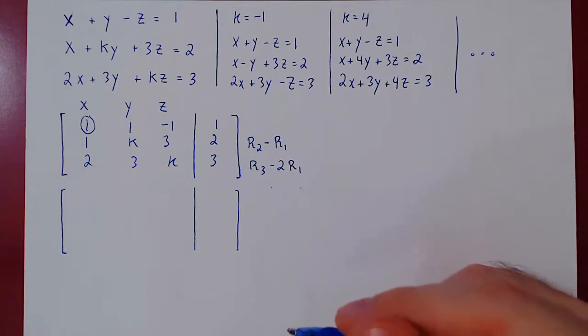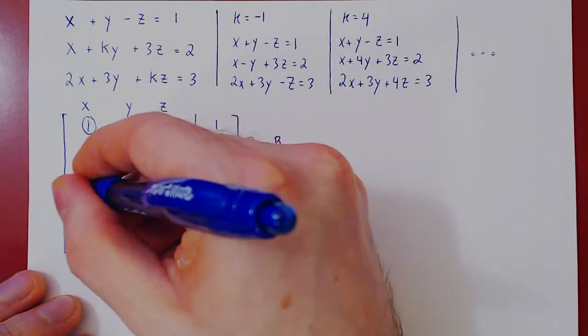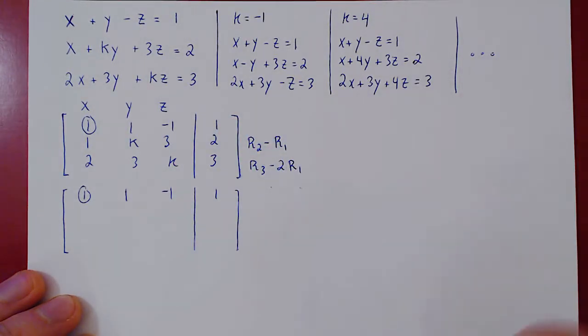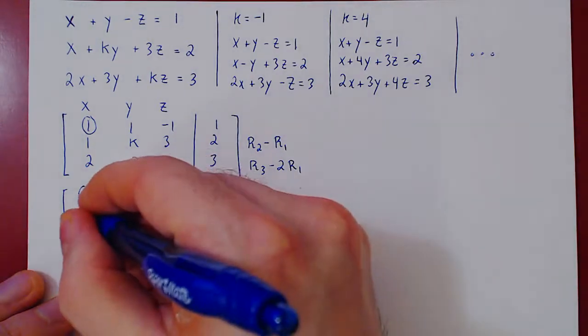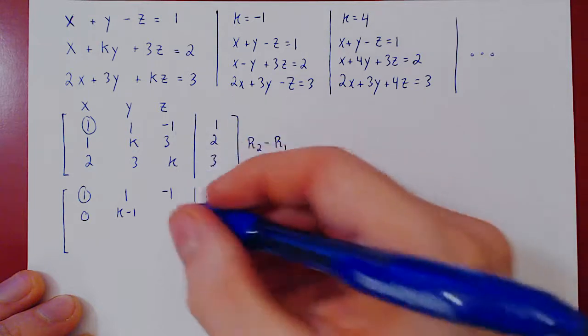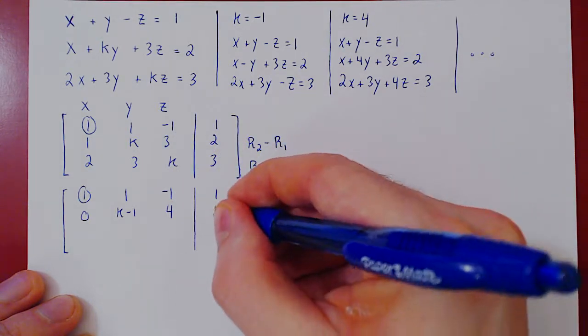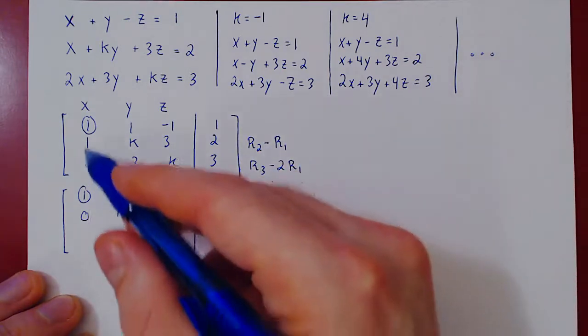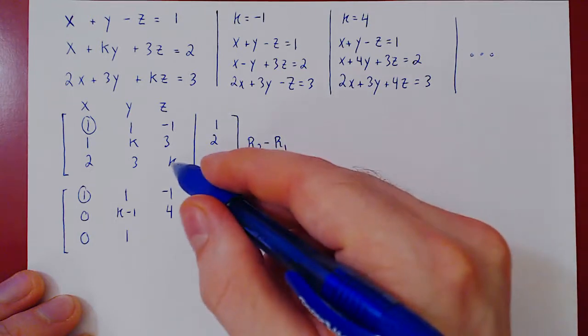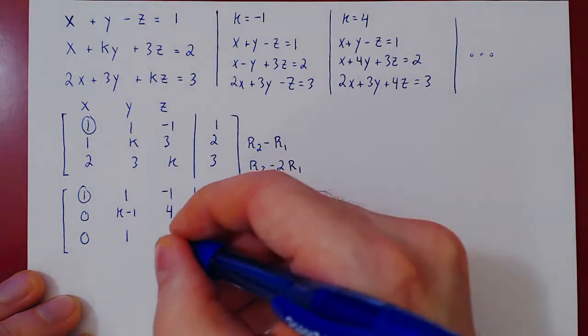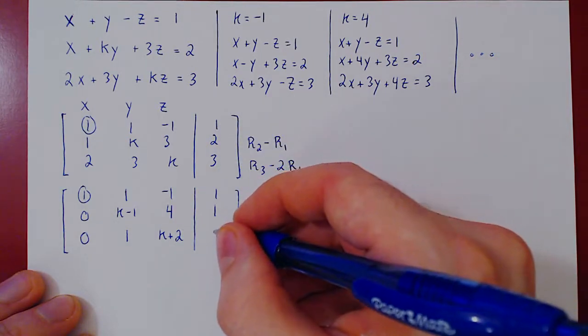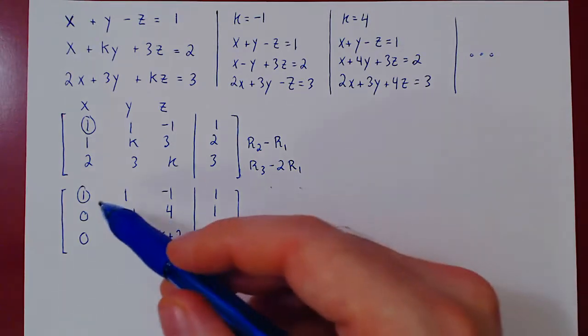We can recopy the first row, as we're not changing it. Let's apply the first row operation. Row two minus row one. So we get zero, k minus one, three minus negative one, three plus one, four, and two minus one, one. The second row operation, so two minus two, zero. Three minus two, one. k minus two times negative one, k plus two. Three minus two times one, three minus two is one. And so we have now our first leading one. We've killed the entries below.